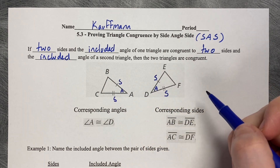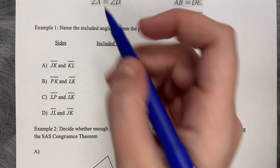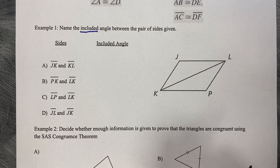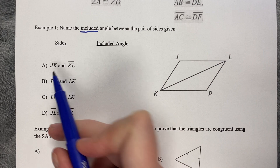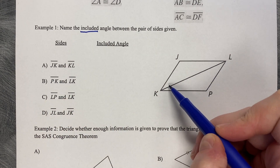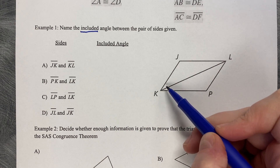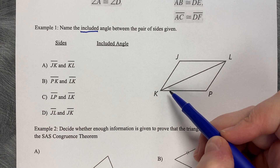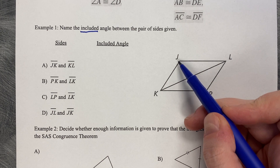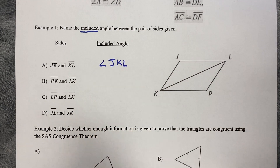So if these pieces match each other, then those two triangles are congruent. For Example 1, we're going to name the included angle — the angle that is between the pair of sides. First, between JK and KL: the angle is at K, but we have to use three letters because angle K is shared between two angles. Going from J to K to L, that's angle JKL.